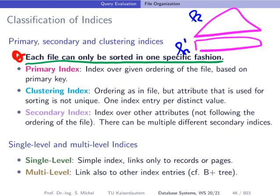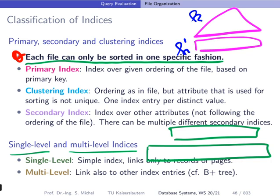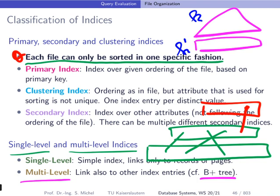Another orthogonal way to classify indices is single-level versus multi-level indices. A single-level index has links from the index directly to records or pages — one index level and one data level with links between them. A multi-level index is what we use in practice, and the most popular example is the B+ tree. In a B+ tree, in contrast to a single-level index, we can have more levels where an index entry can point to other index nodes and not only to data stored in the file.